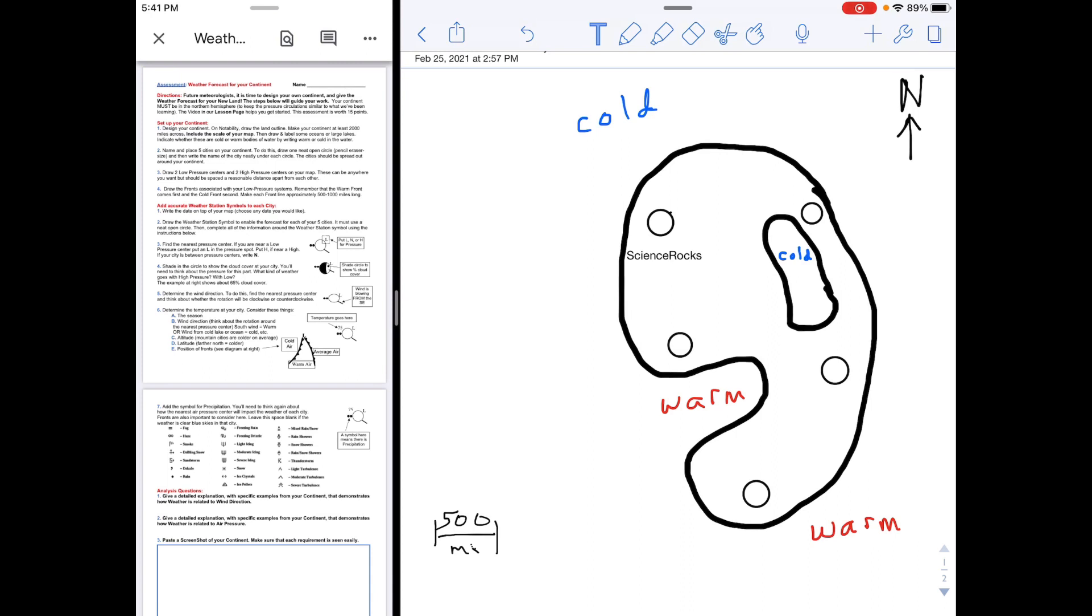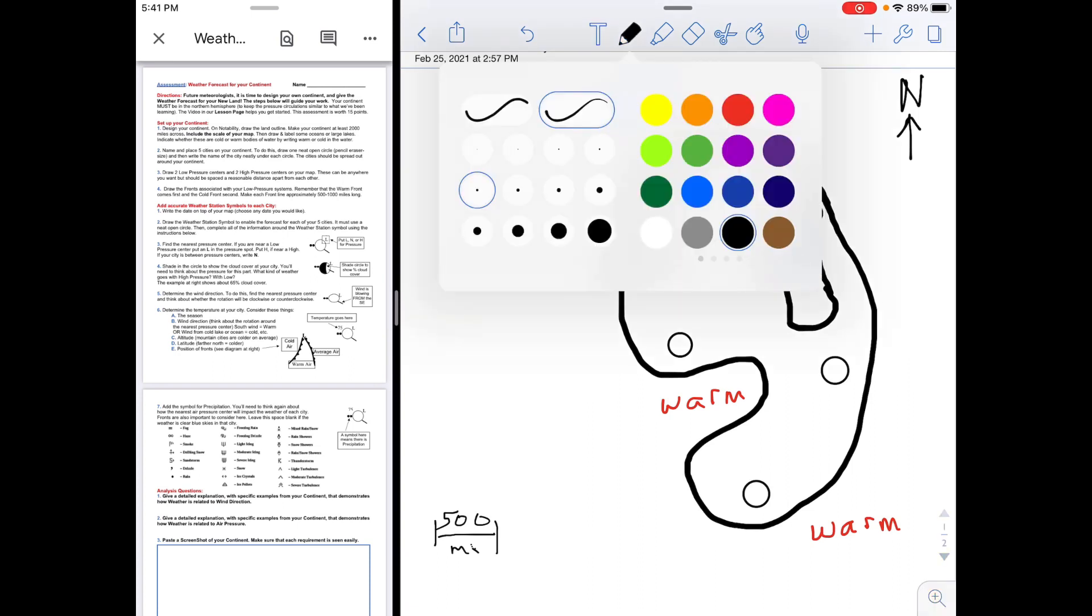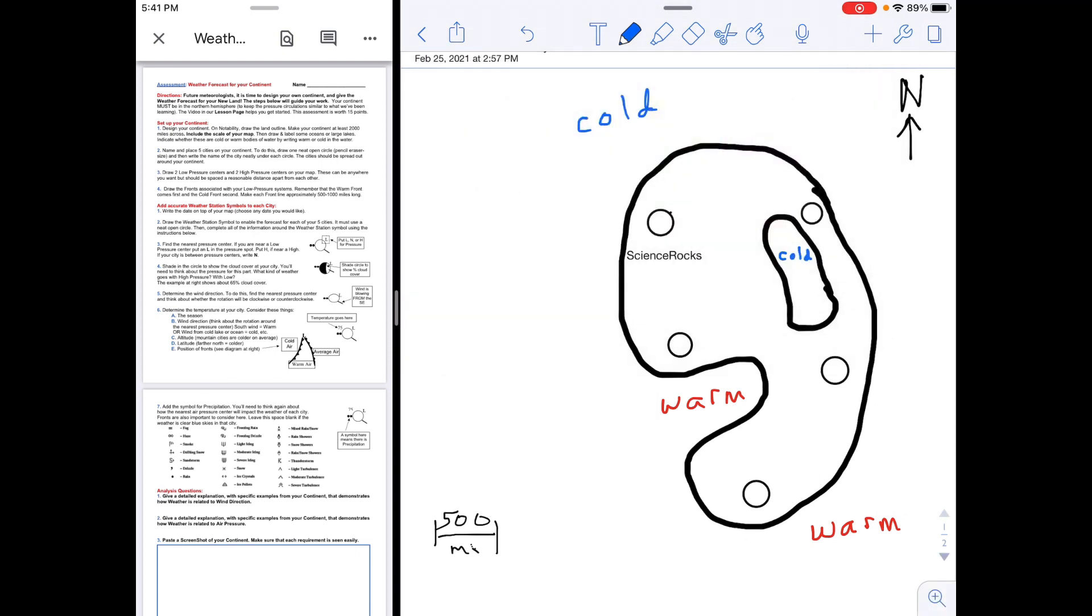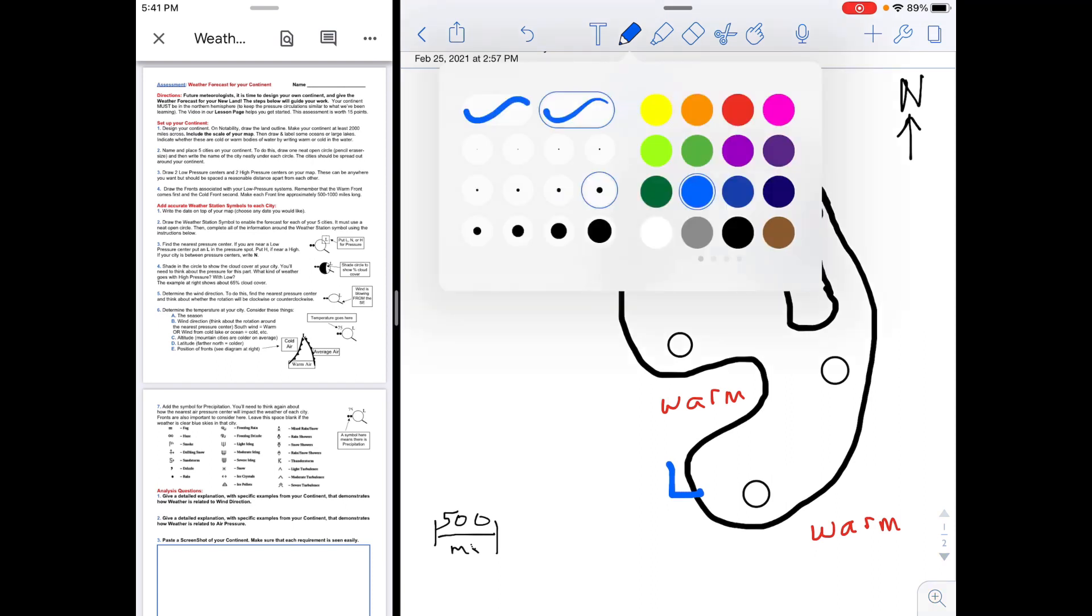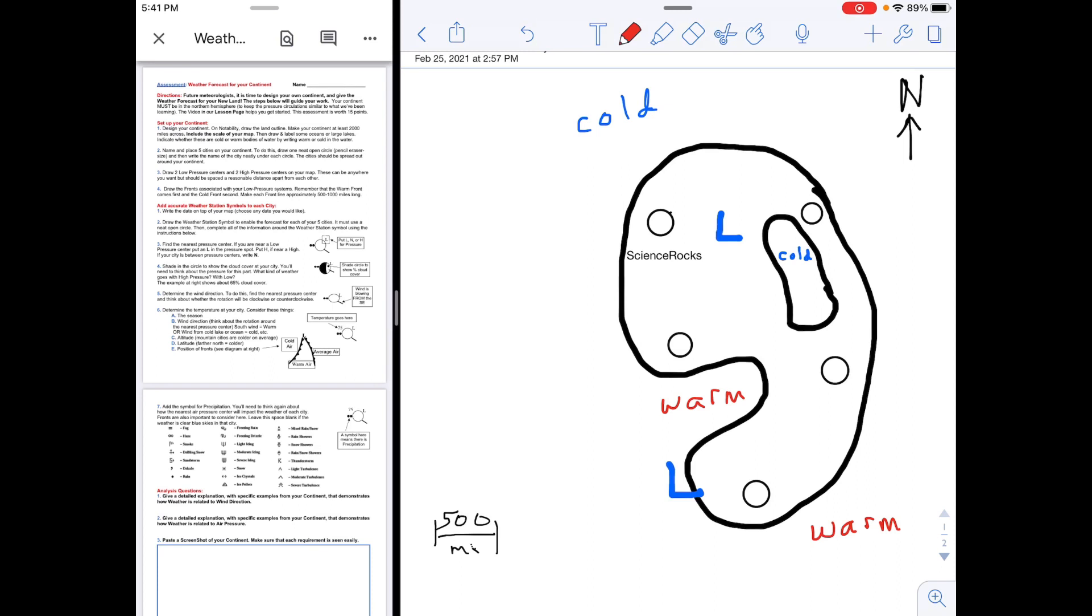Then I'm ready for step three. I have to draw two low pressure and two high pressure centers, and so I'm going to use color coding again and pick a thicker letter for the low pressures. I'm going to have a low pressure system here and another low pressure system maybe like right on the coast, and then I'm going to put two high pressure systems, maybe one right here and then another one right here. And then I've got two lows and two highs, and they can be anywhere but they need to be spread out.